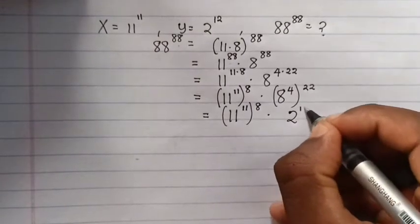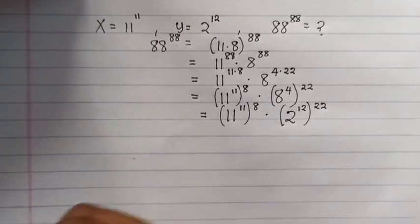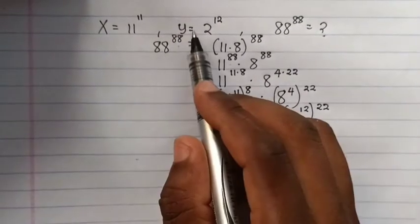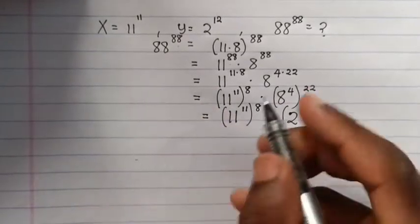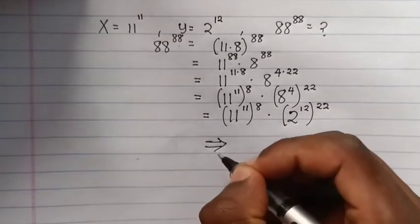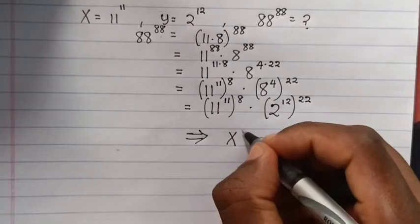From here, 2 to the power of 12 is y, and 11 is x. So I substitute into the equation, then it will be x to the power of 8 times y to the power of 22.